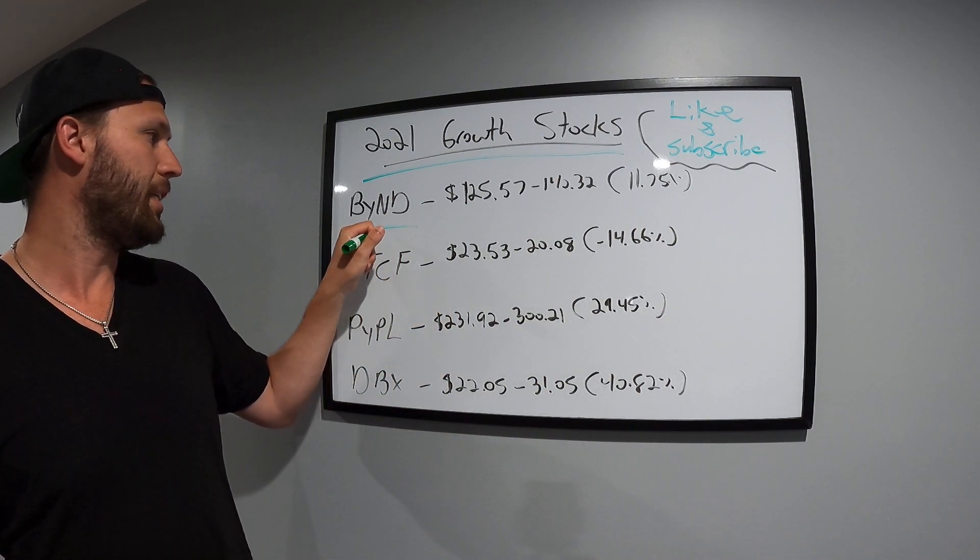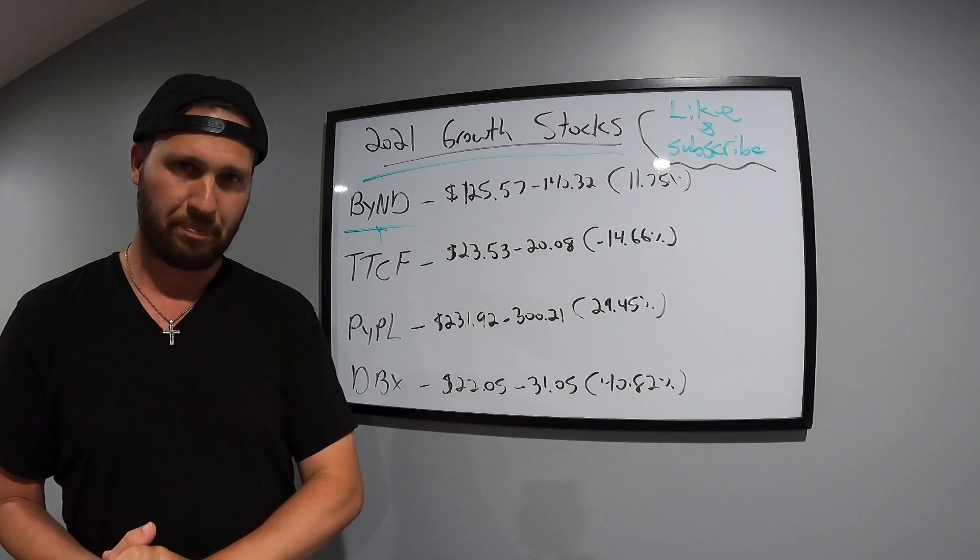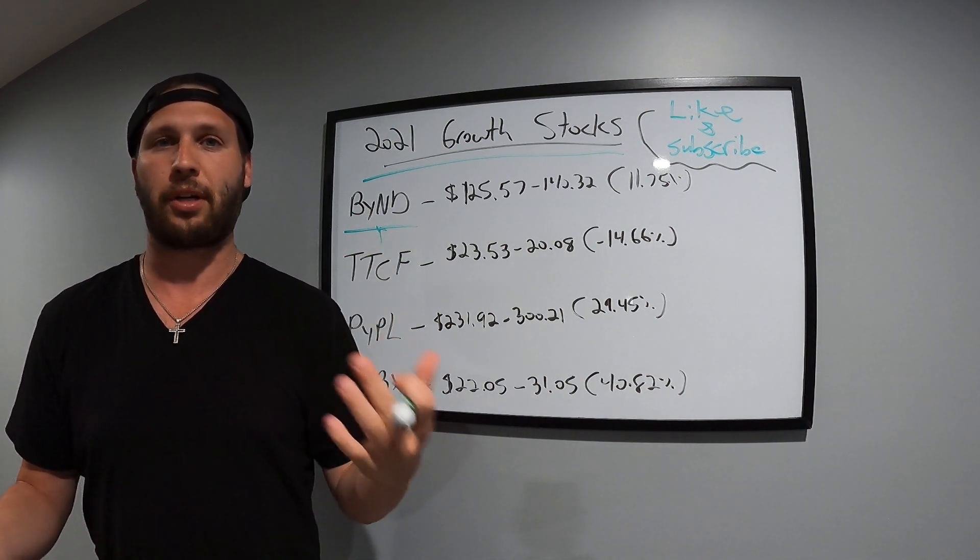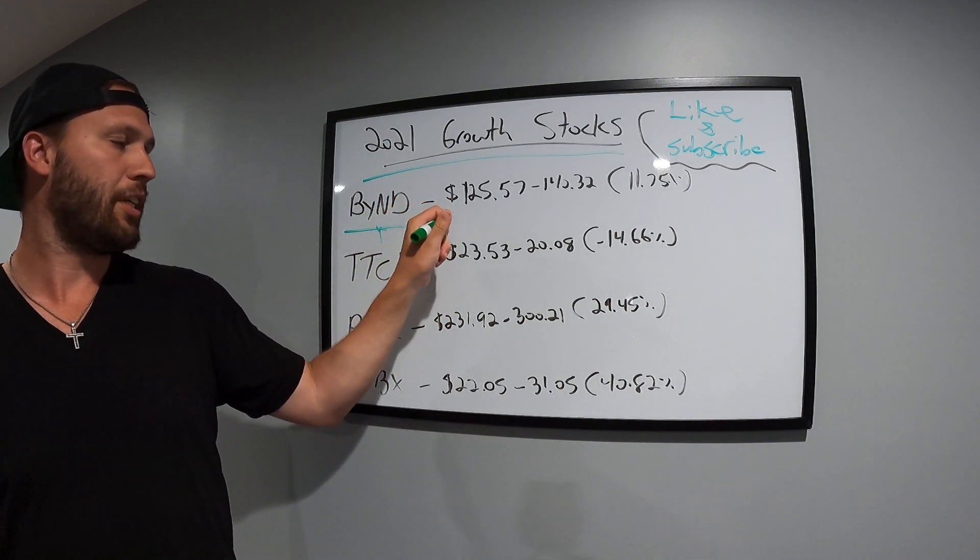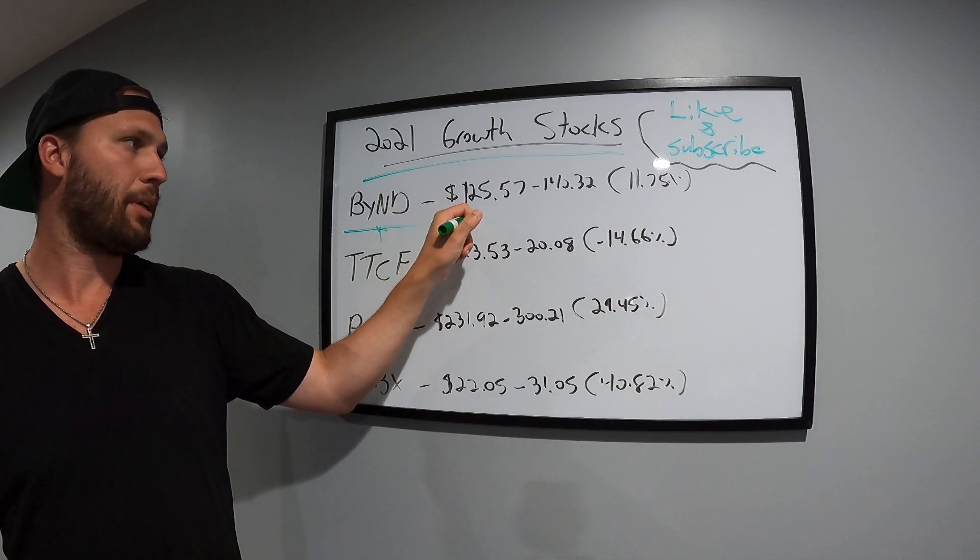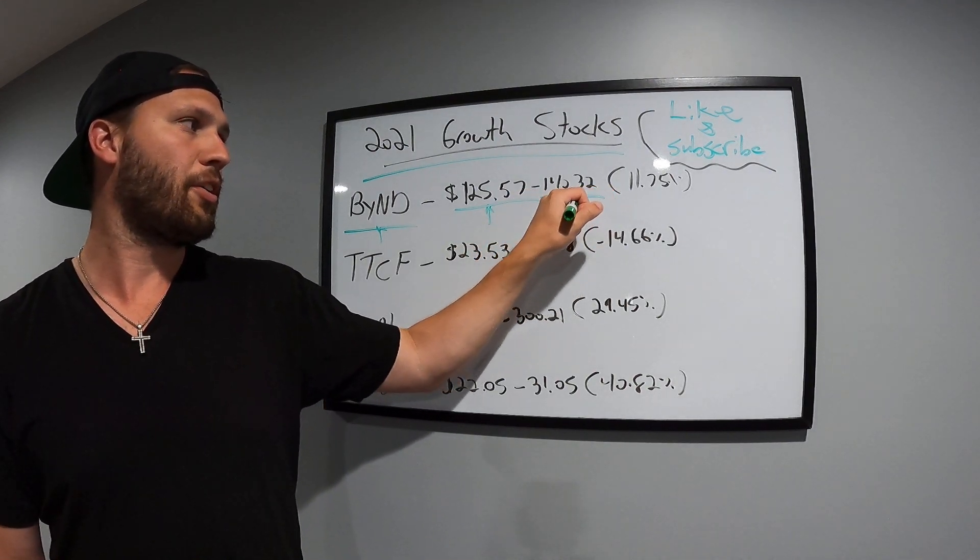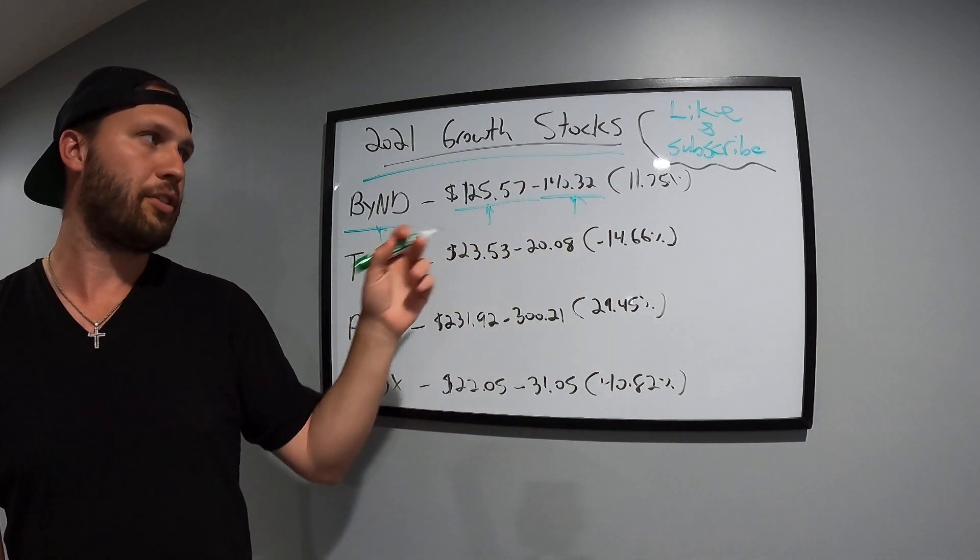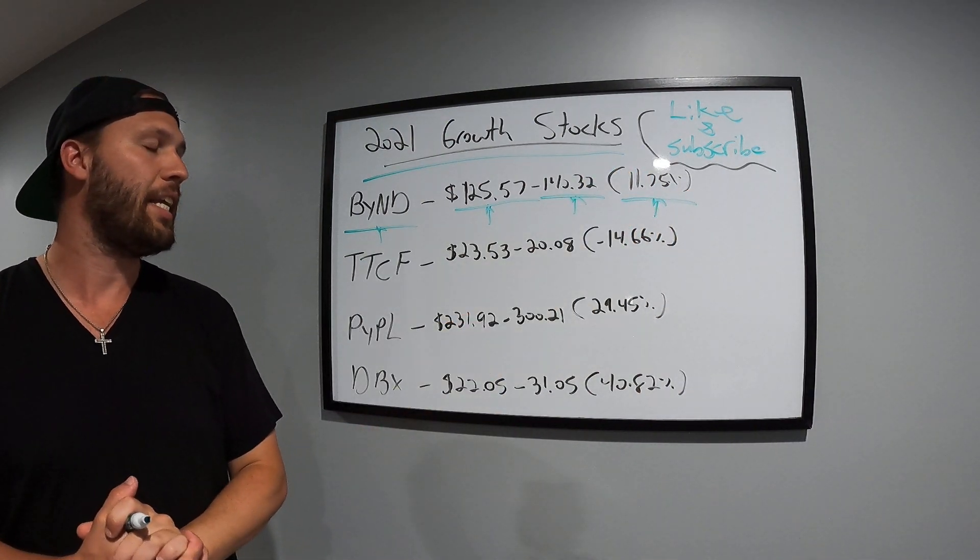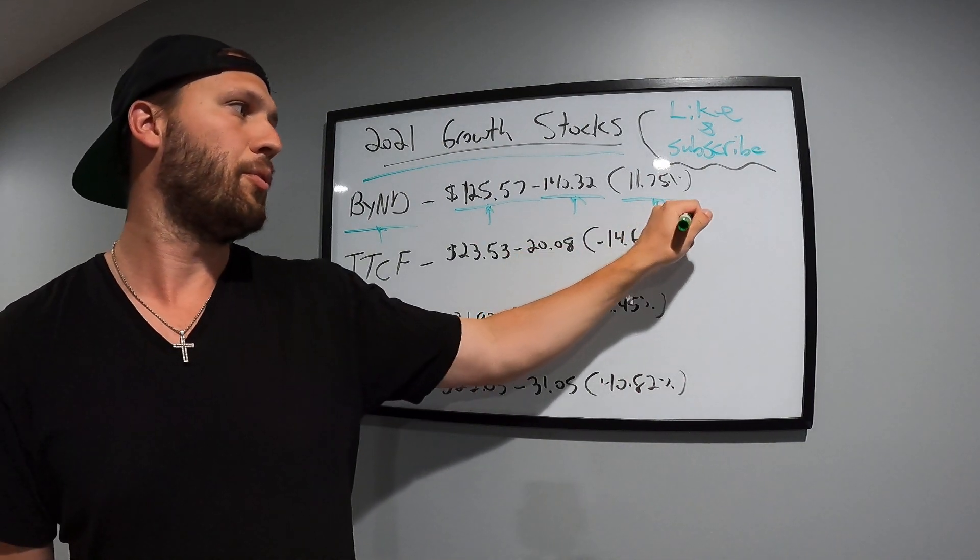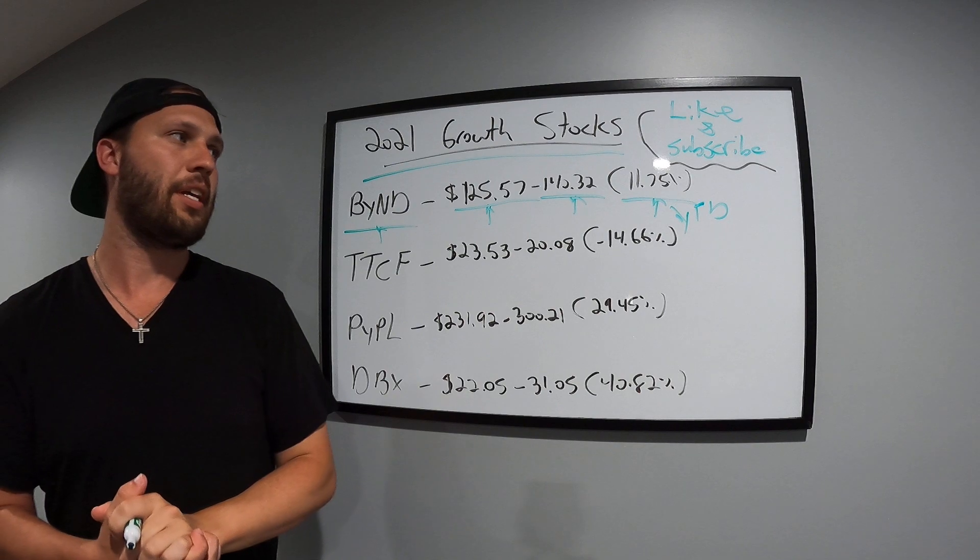So first stock here is Beyond Meat, ticker is BYND. Obviously it's a plant-based food company. They're in all the big box grocery stores, biggest market cap in plant-based meat. This year in 2021, in January, they opened at $125.57 and currently are at $140.32. This has an 11.75% increase year to date. That's really good.